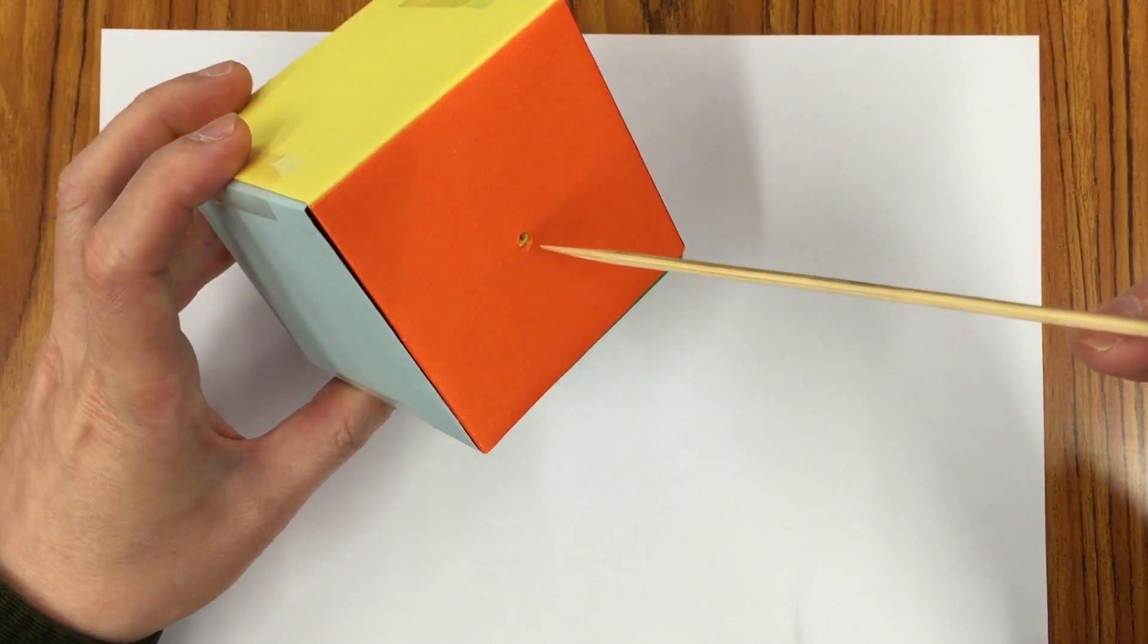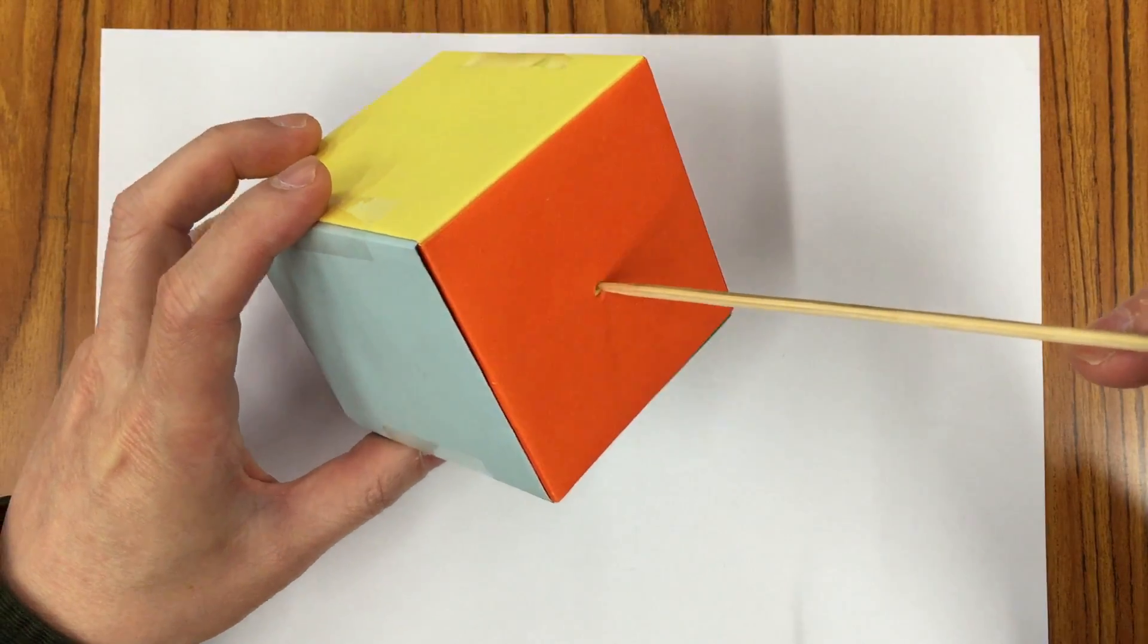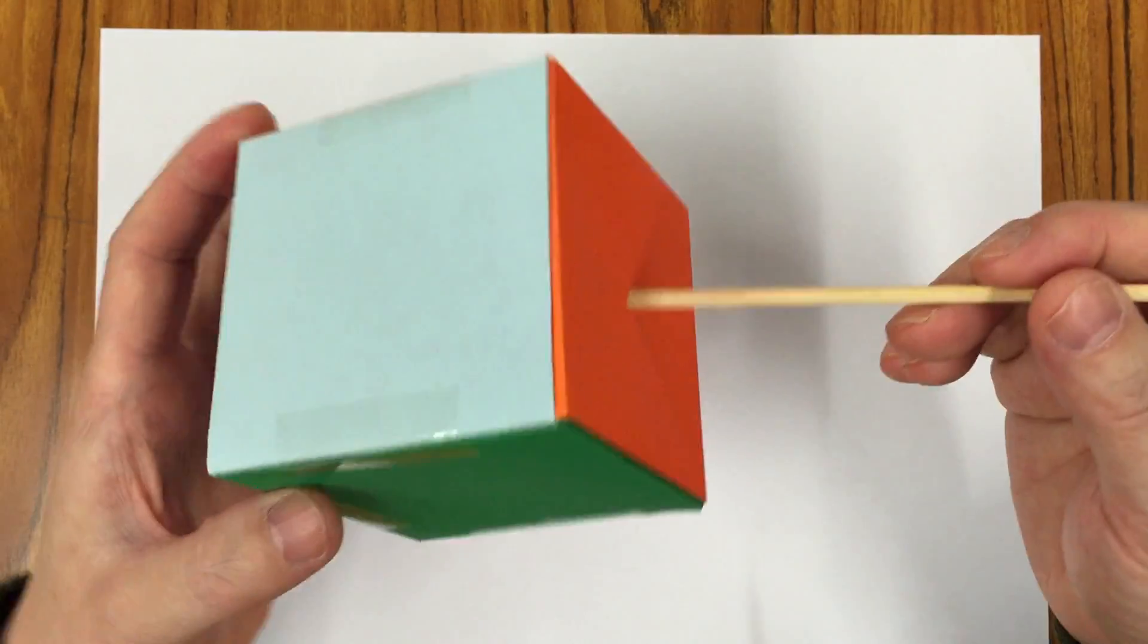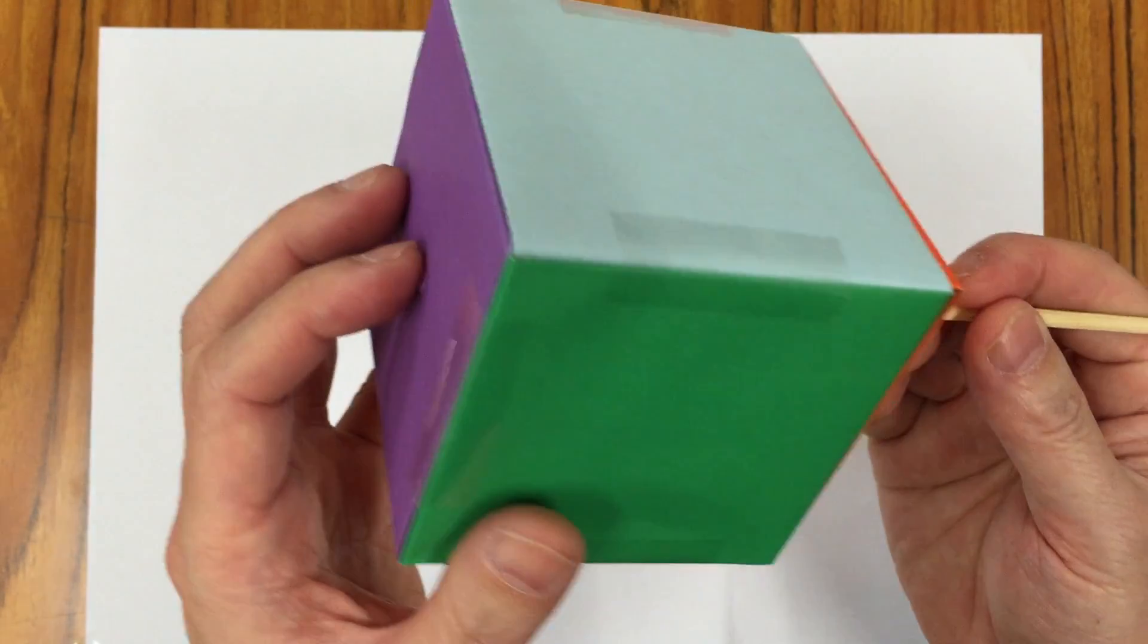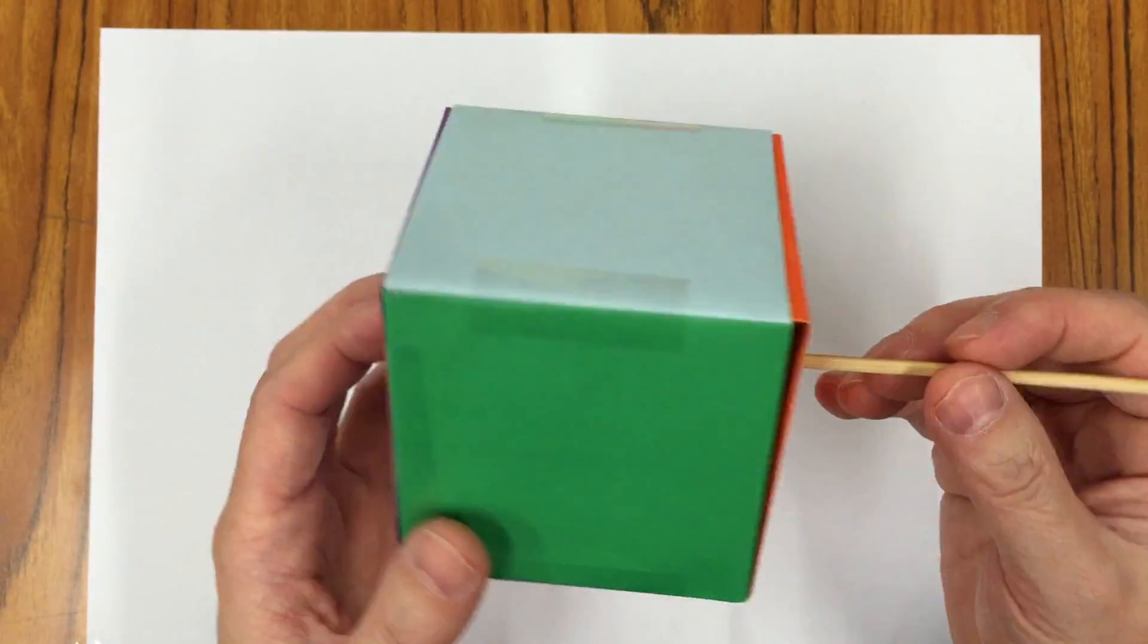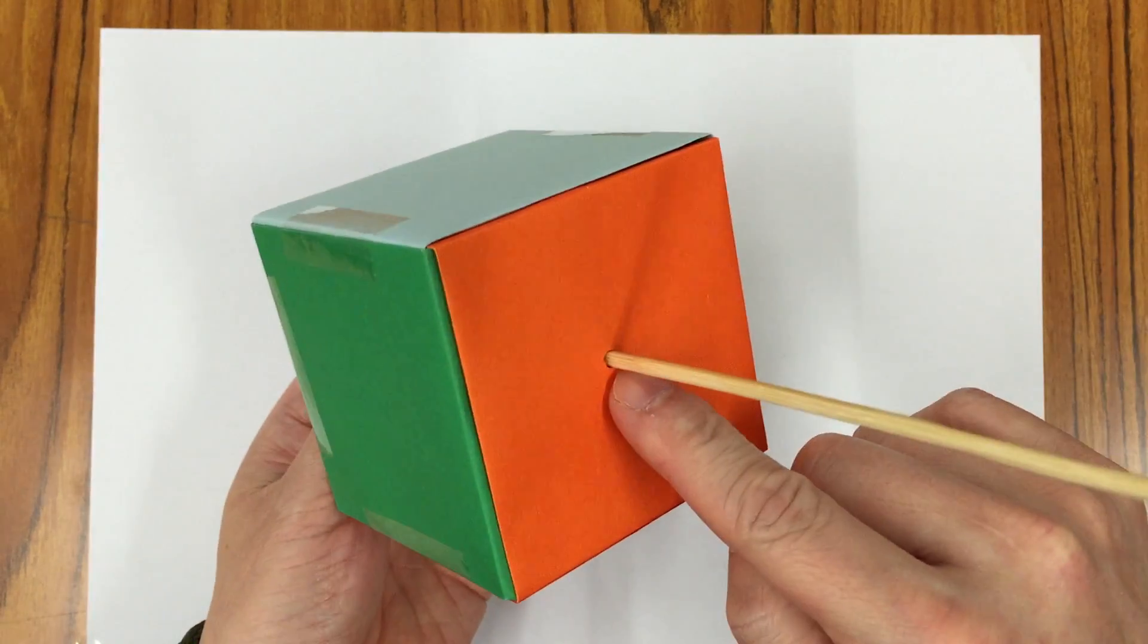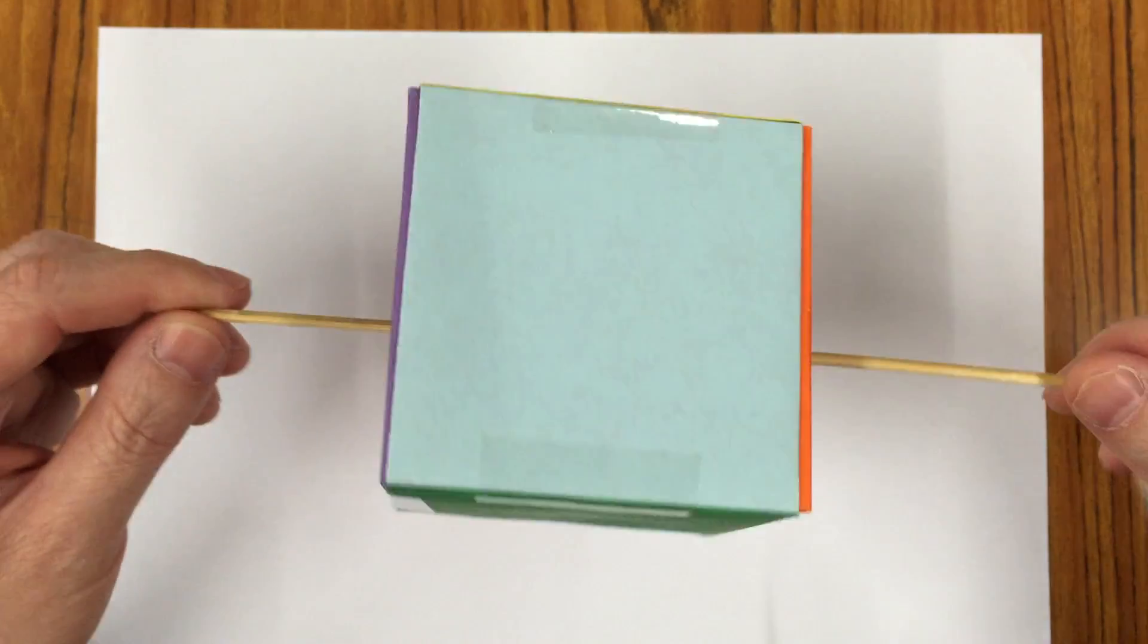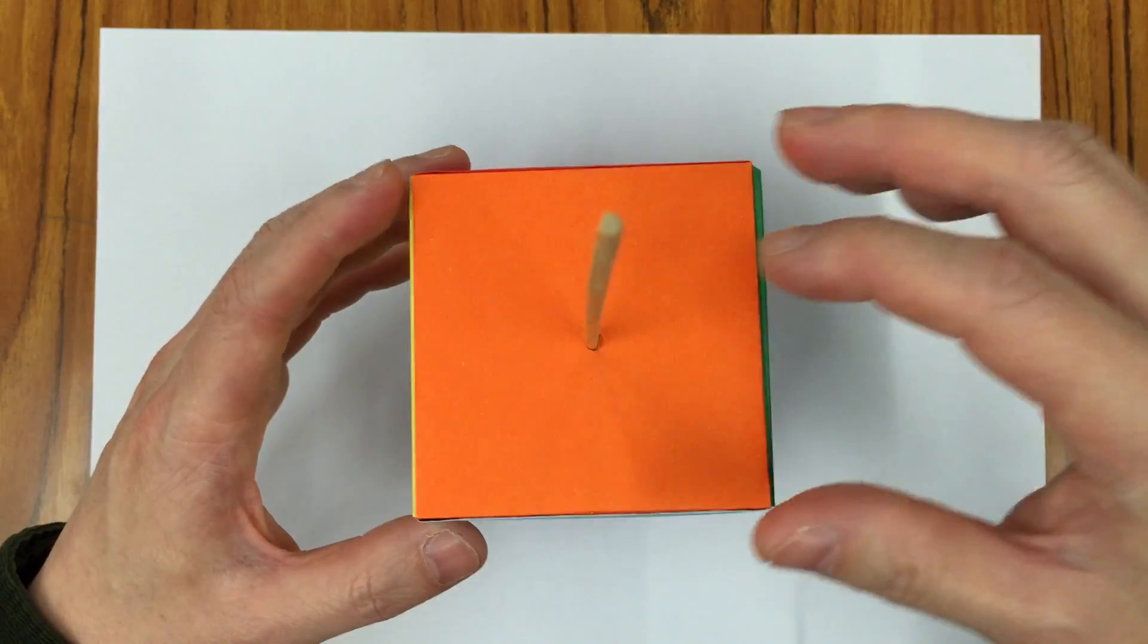Probably the first rotational symmetry is that we can put a stick through the midpoint of a square, or the center point. So now we have rotational symmetry of a cube.